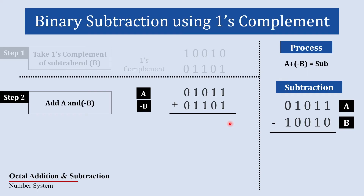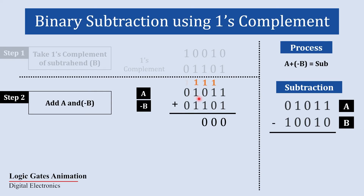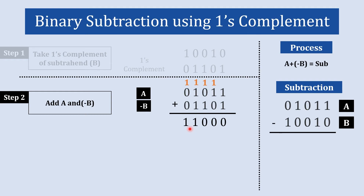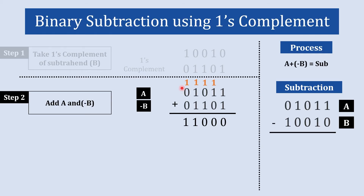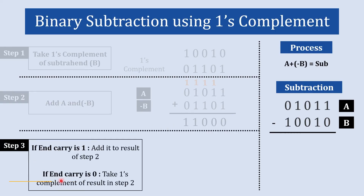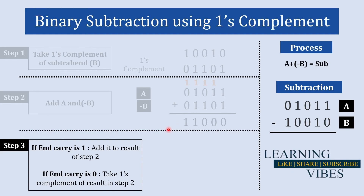Performing the addition: 1 plus 1 is 0 carry 1; 1 plus 1 carry is 0 carry 1; 1 plus 1 carry is 0 carry 1; 1 plus 1 carry is 0 carry 1; then 0 plus 1 is 1; and 1 plus 0 plus 0 is 1. Here we do not find any end carry, so in step number three, since the end carry is 0, we take the one's complement of the result.